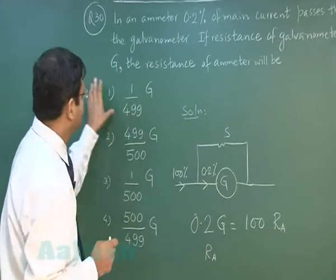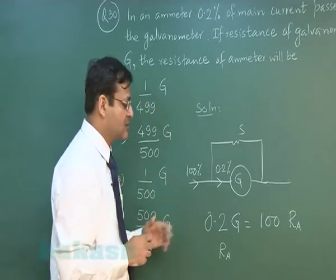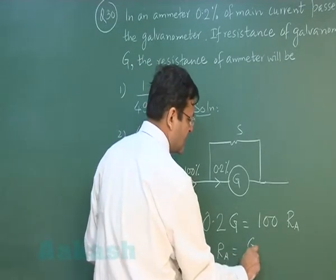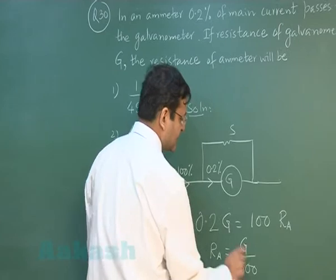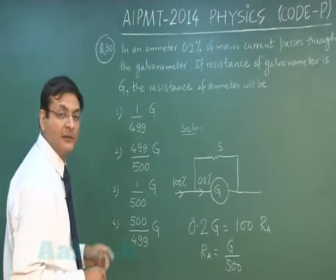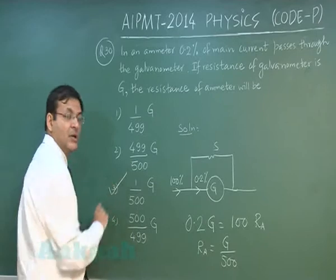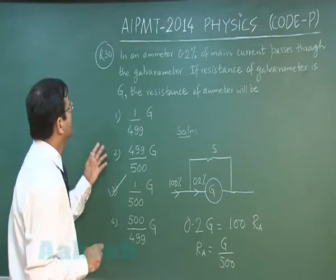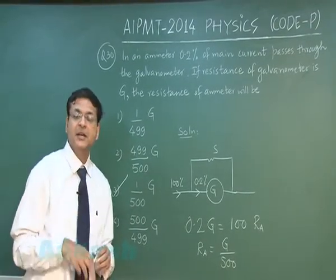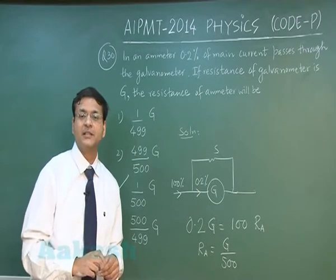Another option, the first option that is for that, that is wrong option. You have G upon 500, this will be the resistance of the entire ammeter which has been demanded. So I will be marking answer 3 for this particular question, and that explains question number 30. Now let us discuss the next question, that is question 31.